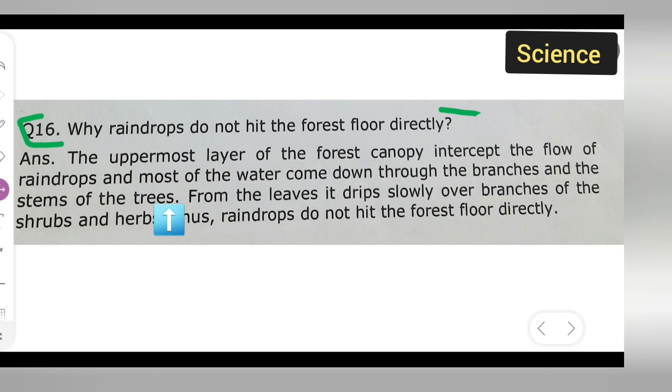Okay. So, now from the leaves, it drips slowly over branches of the shrubs and herbs. Thus, raindrops do not hit the forest floor directly.